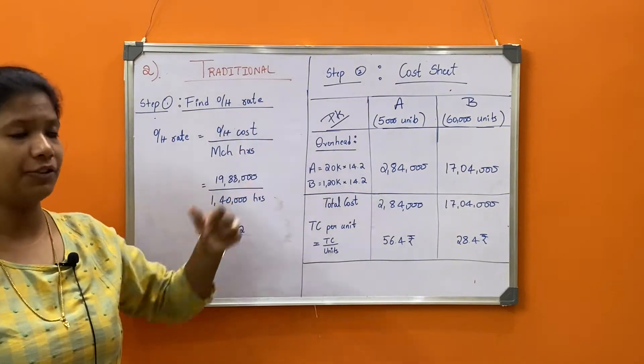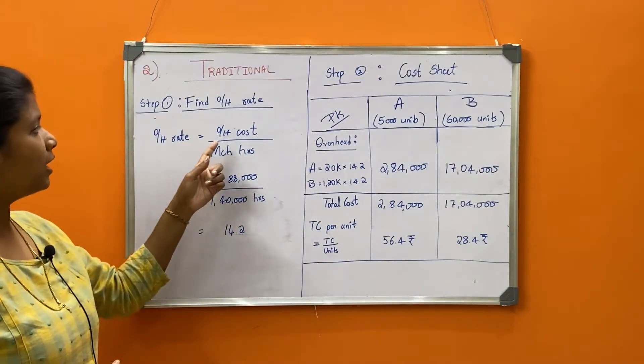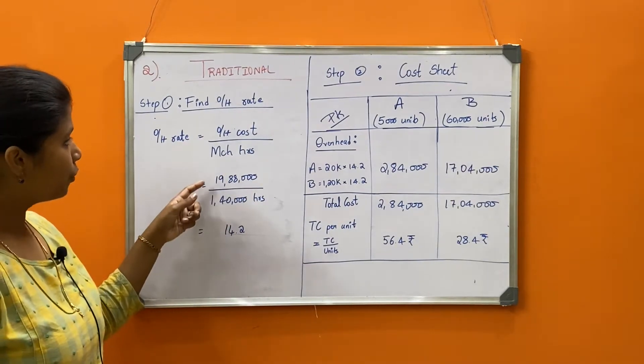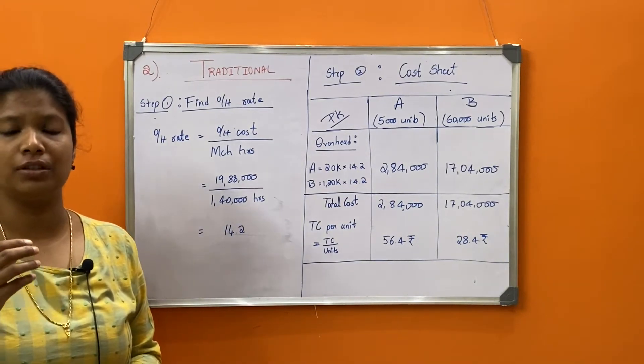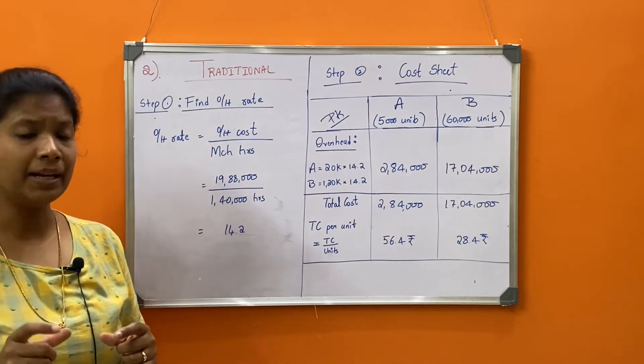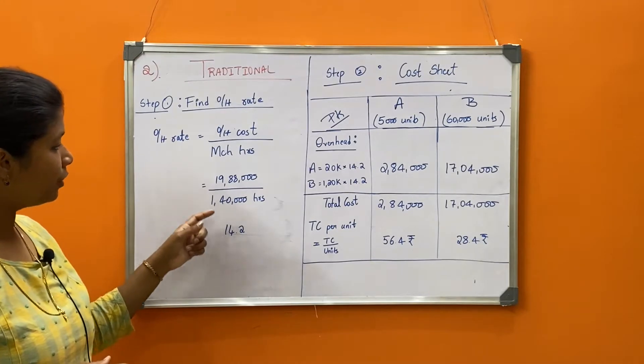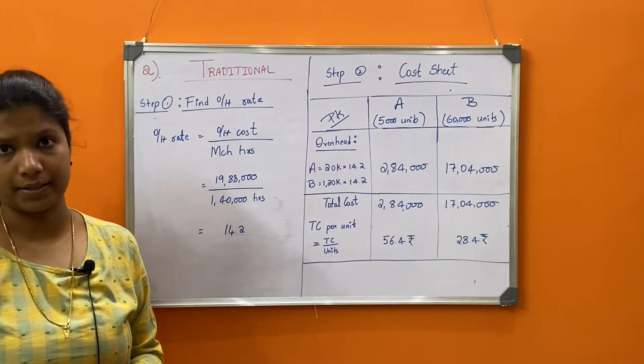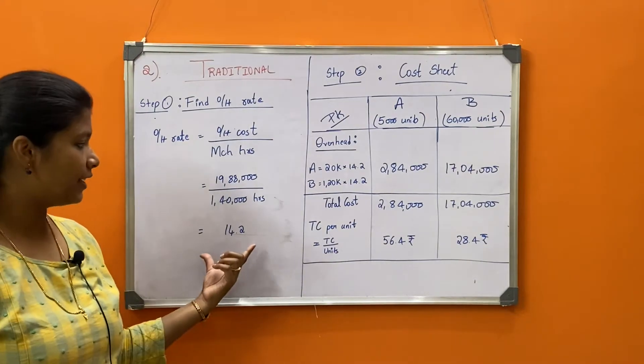We'll be solving under the first method, traditional. Step one: find out the overhead rate. The formula is total overhead cost divided by the machine hours. The overhead cost given in the question - material inspection and all those costs - when you total up all three different activities, you get 19,88,000, divided by machine hours of 1,40,000 hours. Once we divide that, we get an overhead rate of 14.2, and this rate we're going to apply to the cost sheet.